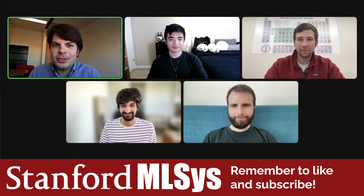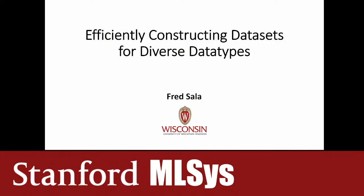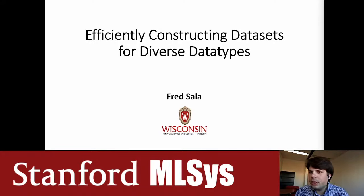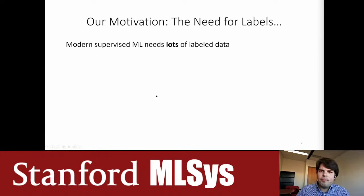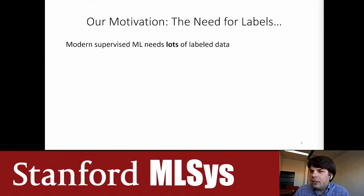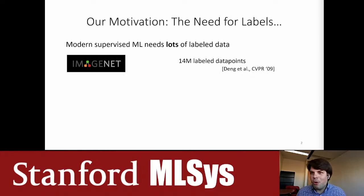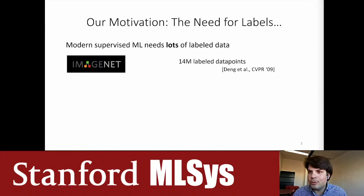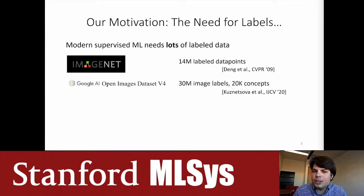Fred will be talking about efficiently constructing datasets for diverse data types. He's a professor at UW-Madison, a research scientist at Snorkel AI, and was previously a postdoc at Stanford. The motivation for weak supervision is that modern supervised learning really needs a ton of data — our models are extremely data hungry. ImageNet came out over 10 years ago with more than 10 million labeled points, kicking off the deep learning revolution, and we now have on the order of 30 million labels in image datasets.